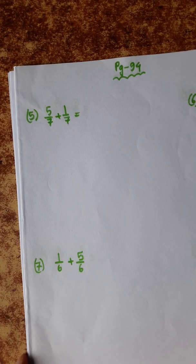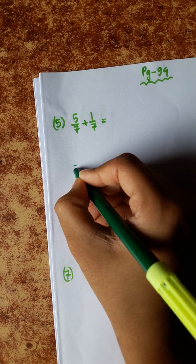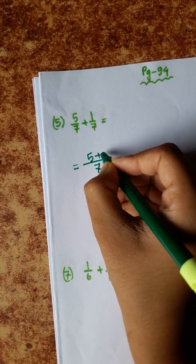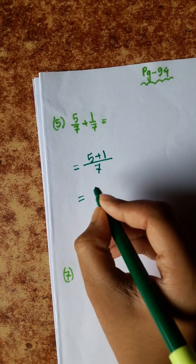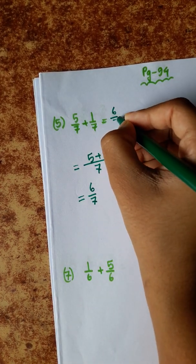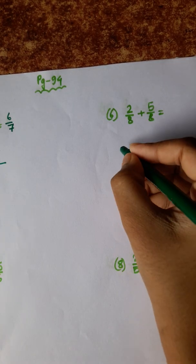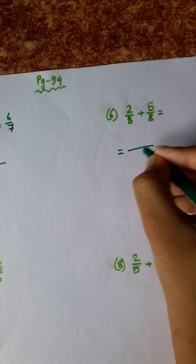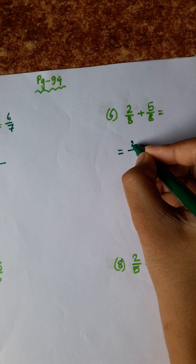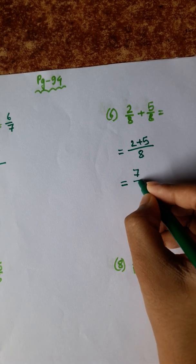Number 5: denominator same, 7. Numerator 5 plus 1 is 6 by 7. Number 6: denominator 8. Numerator 2 plus 5 is 7 by 8.